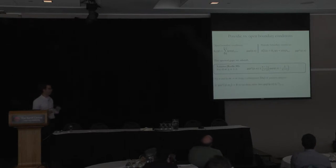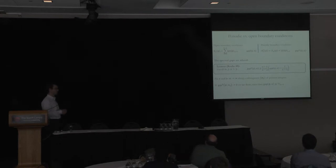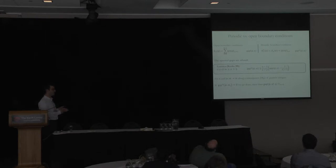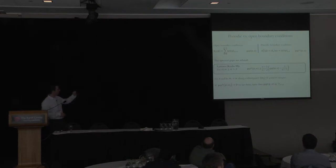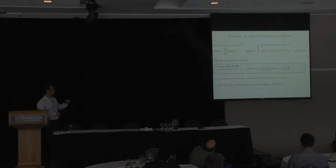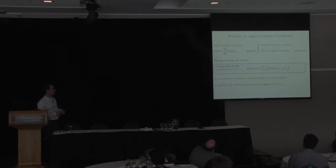I want to imagine fixing n, so the right-hand side is just some fixed value. Then I'm going to take m to infinity — maybe along a subsequence of positive integers. Now, suppose that the periodic chain is gapless and that its gap goes to zero along the subsequence I'm considering. Then the left-hand side is going to zero. But the right-hand side, since we fixed n, stays the same. So we have zero is greater than or equal to the right-hand side, which shows that the gap of the open boundary chain is upper bounded by 1 over n minus 1.